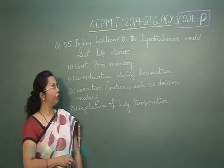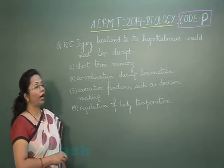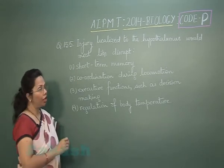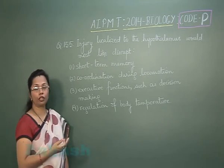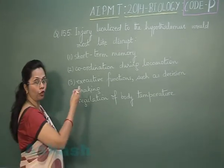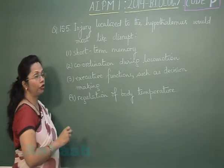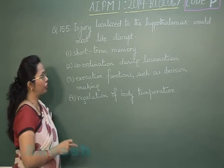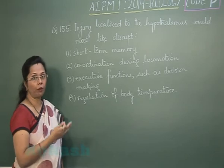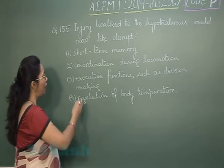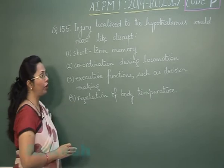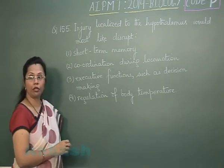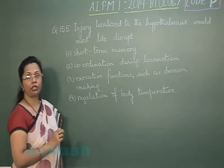Question 155: Injury localized to the hypothalamus would most likely disrupt which function? Short-term memory is a function of the hippocampus, so that is not the answer. Coordination during locomotion is a function of the cerebellum. Executive functions such as decision making are majorly part of the forebrain, especially the cerebrum.